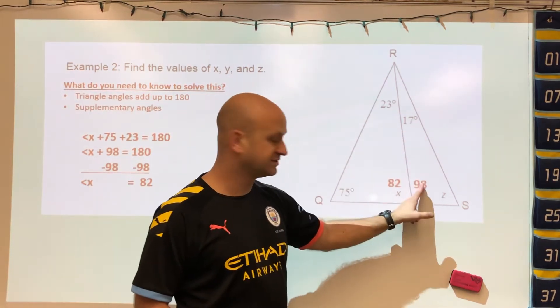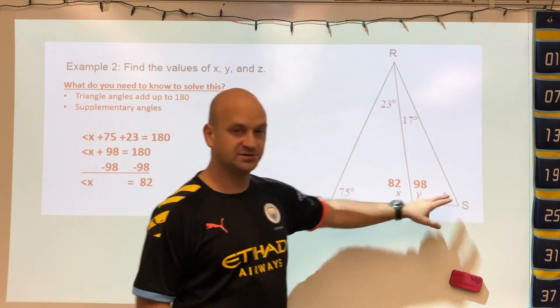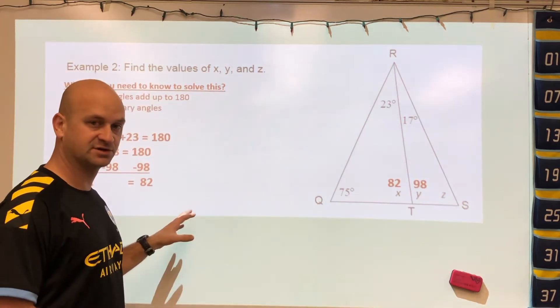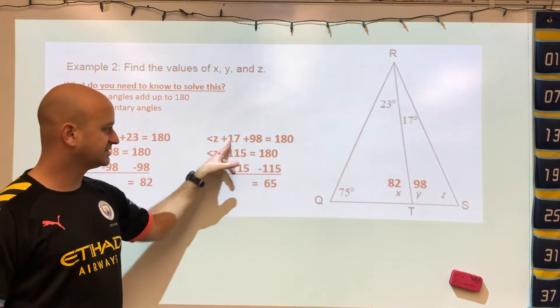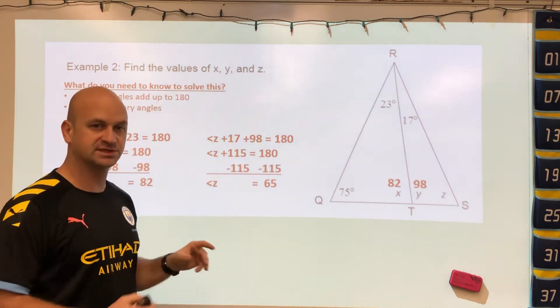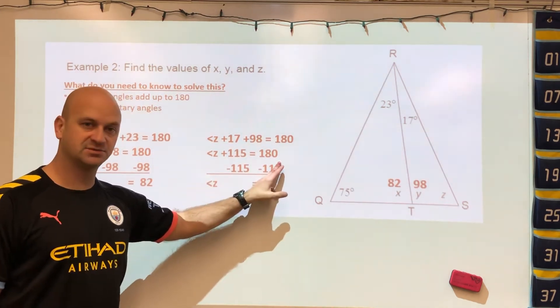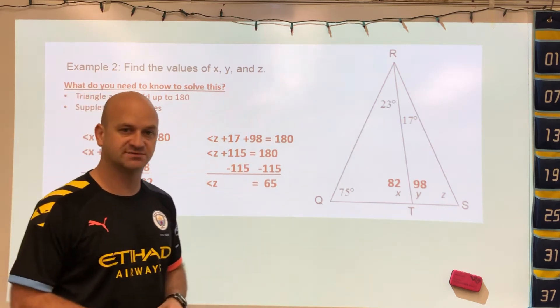Now we have two angles of a given triangle and we can find the third just like we did in the first part of the problem. If we add up 17 and 98, combine those like terms, subtract that number from 180, we would get the missing value of 65.